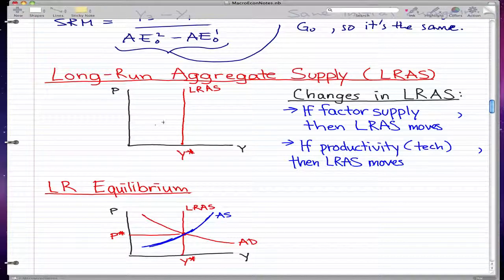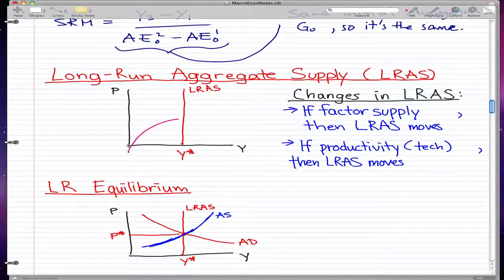Long-run aggregate supply is what we're going to talk about next. This is a graph of our long-run aggregate supply; it's just a straight line. This Y* is our equilibrium income or output.